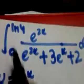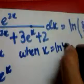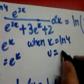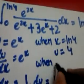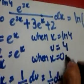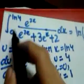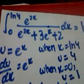Now we need to replace the limits — we need to find the equivalent limits in u. For the upper limit, when x is ln 4, u is going to be e to the power ln 4, which is simply 4. And when x is 0, u is going to be e to the power 0, which is 1. So ln 4 and 0 are the limits in x, and 4 and 1 are the equivalent limits in u.